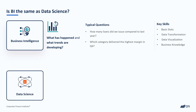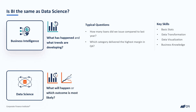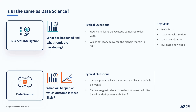Data science, on the other hand, isn't so backwards looking. Instead, it focuses on what will happen or which outcome is most likely. Data science questions might be: can we predict which customers are likely to default on their loans? Or can we suggest relevant movies that a user will like based on their previous choices? The skills used in data science are inherently more technical and include coding, more advanced statistics, and that specific domain knowledge related to the industry you're working on.